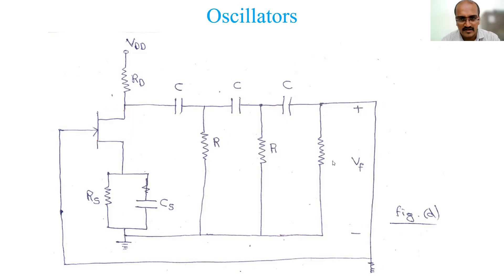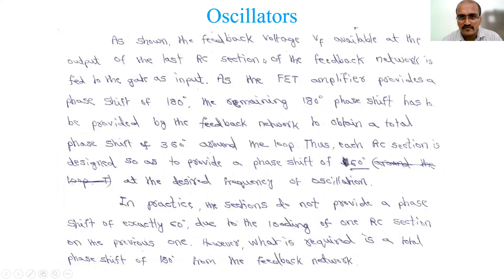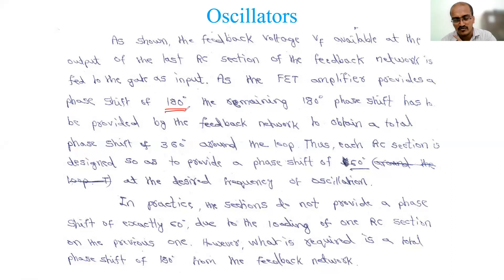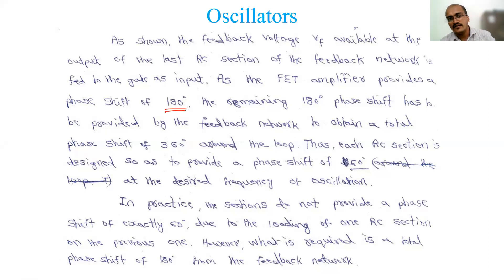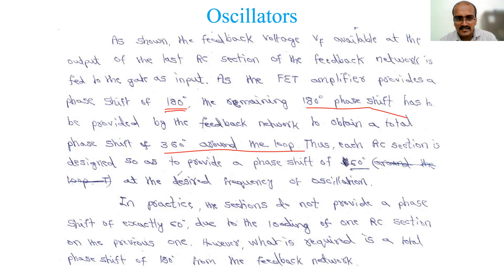The feedback voltage Vf available at the output of the last RC section is fed to the gate as input. The FET amplifier provides a phase shift of 180 degrees — any amplifier, whether op-amp, FET, or BJT, gives a 180-degree phase shift (for a positive cycle it gives a negative cycle). To satisfy Barkhausen's criterion, the remaining 180-degree phase shift must come from the feedback network, giving a total of 360 degrees around the loop.